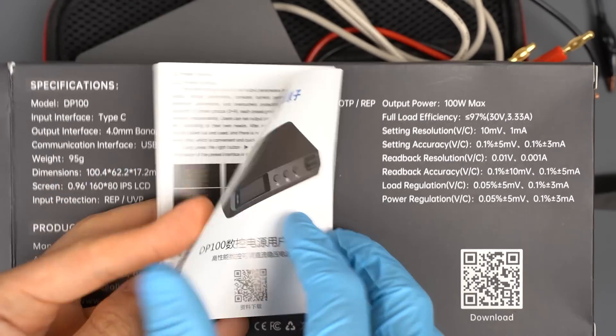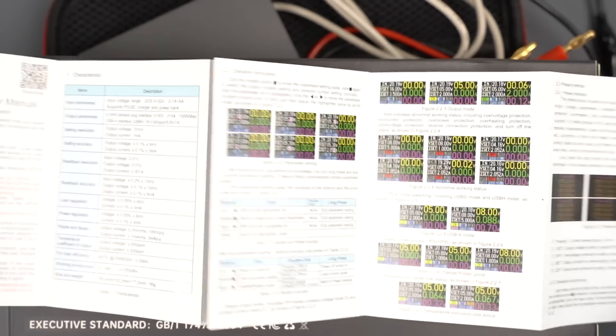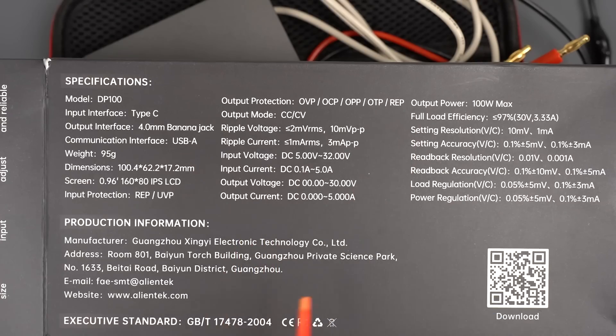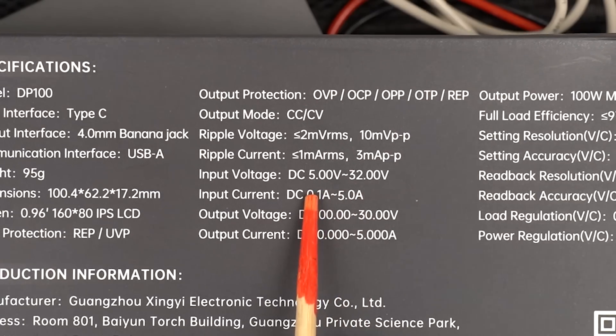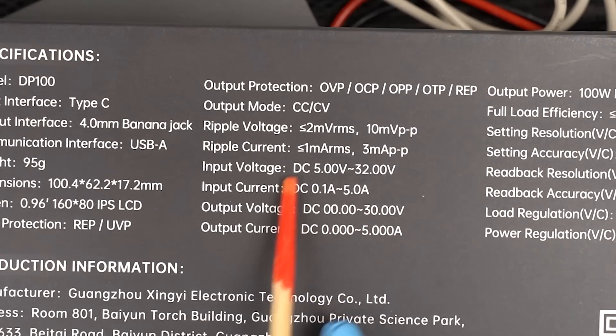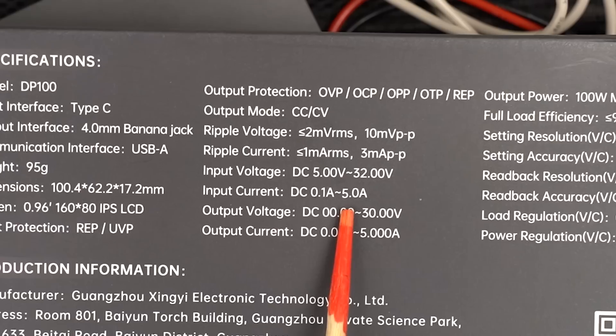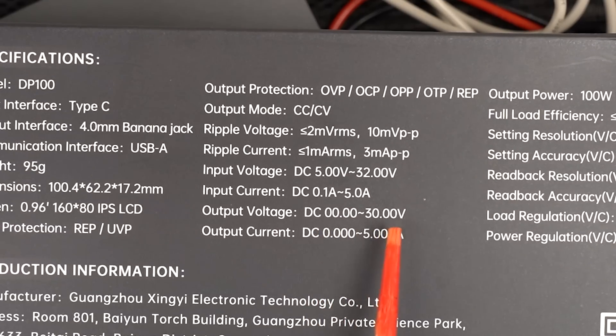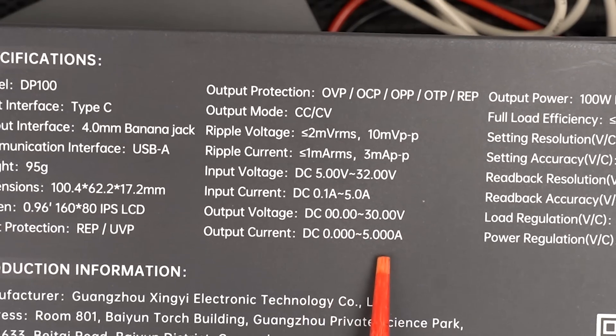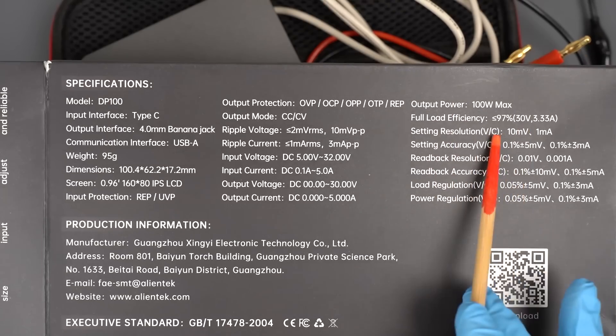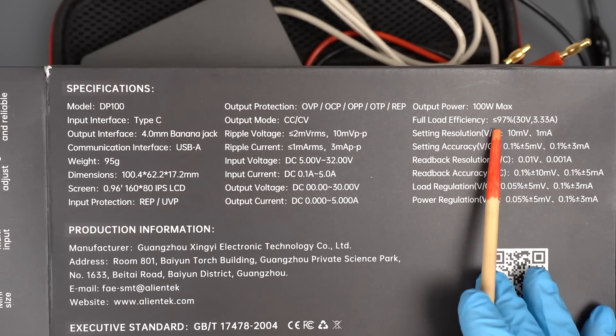An instruction was in the package. How to use and the specifications are described. Basic specifications are written here. The input voltage is from 5 to 32 volts. The input current is 5 ampere maximum. The output voltage is from 0 to 30 volt. The output current is from 0 to 5 amps. The output power is 100 watt maximum.